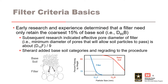Filter criteria basics. Dam engineers have known since the 1950s and 1960s that the most efficient way of stopping the erosion process is to zone the dam and to provide filters. Terzaghi is generally credited with the development of modern filter criteria. Sherrard, in his 1984 paper, conducted a laboratory study adding base soil categories and regrading to the procedure. If the D85 of the base soil is the same size as the effective diameter of the filter, then D15 of the filter is equal to 9 times the D85 size of the base soil. This criterion applies to base soil category 1, which has a fines content of greater than 85%.